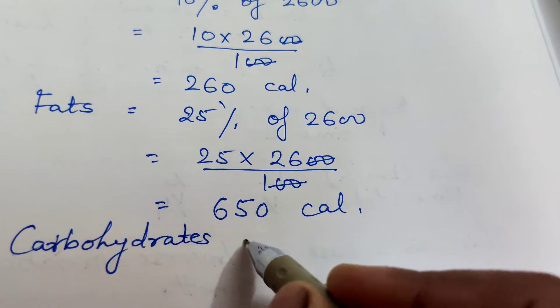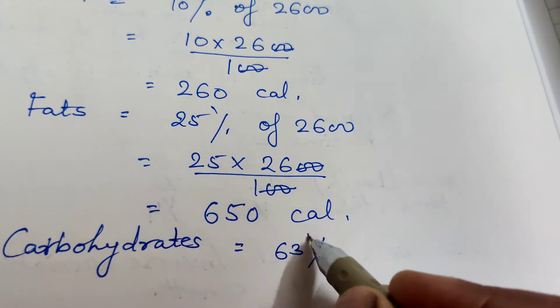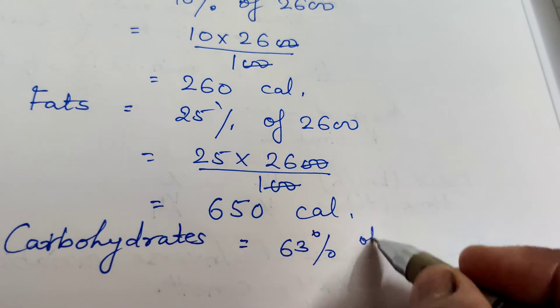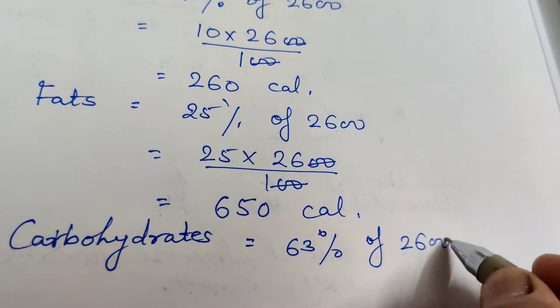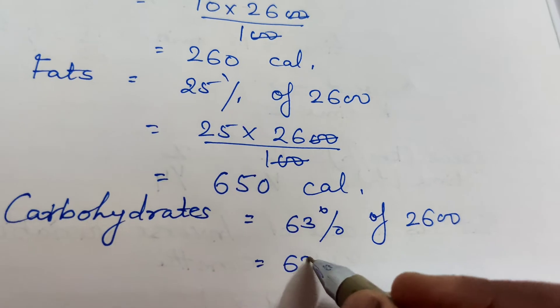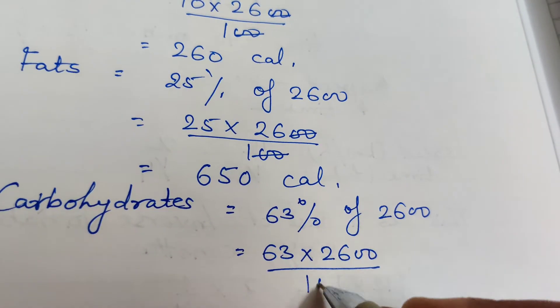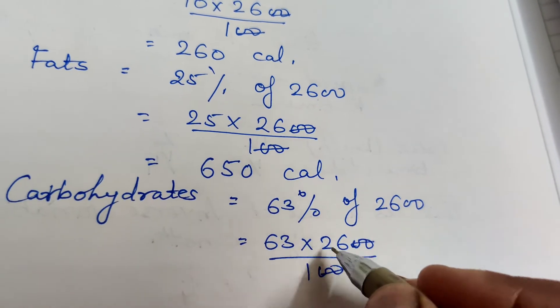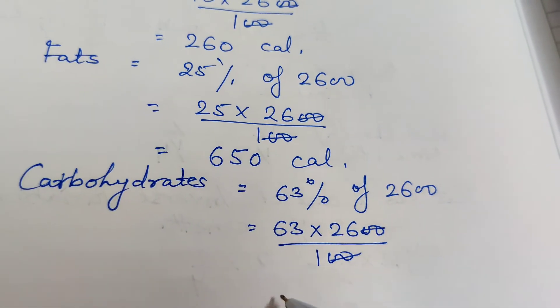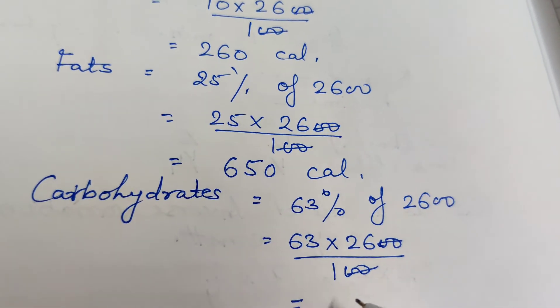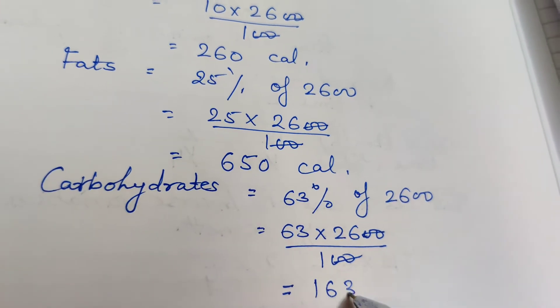Carbohydrates equals 63%. 63 into 2600 by 100. Cancel, now multiply 26 into 63. We get 1638 calories.